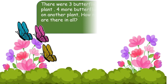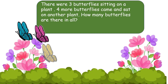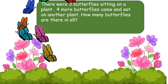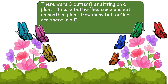There were 3 butterflies sitting on a plant. 4 more butterflies came and sat on another plant. How many butterflies are there in all? First plant mein 3 butterflies baithe huye thay. Abhi 4 more butterflies aa kar second plant par baith gaye. Aap log dekh sakte ho ki butterflies ki number abhi badh gayi hai. And you know more means addition.